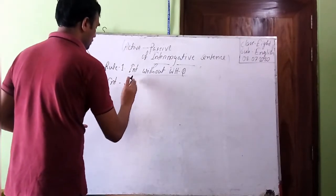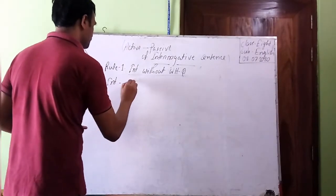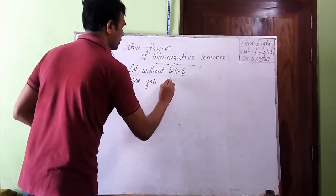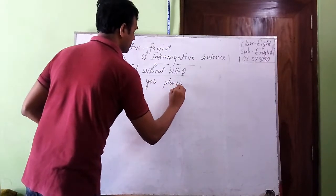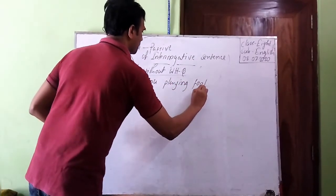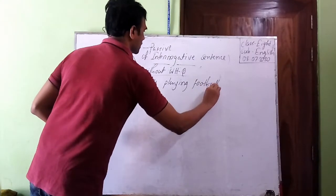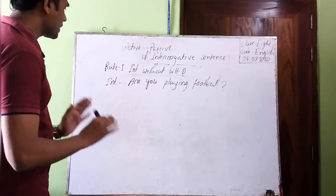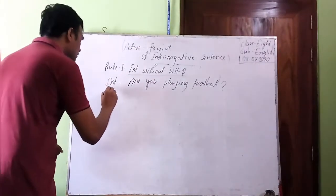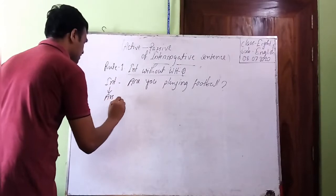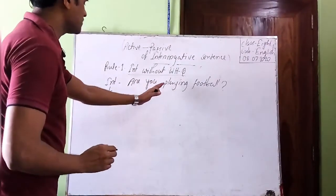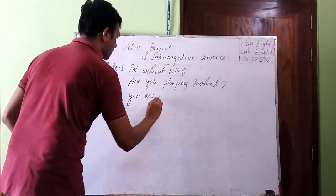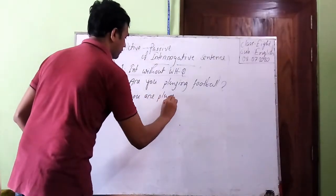Suppose you have an interrogative sentence like: 'Are you playing football?' What we have to do first is turn this interrogative sentence into an assertive sentence. So the assertive form of this sentence will be: 'You are playing football.'